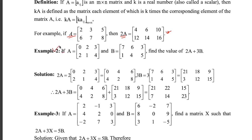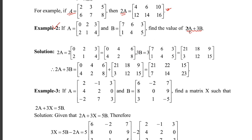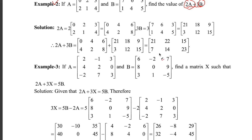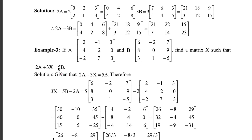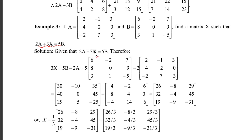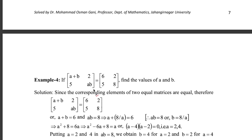For example, if A is a given matrix, then 2A means multiplying each entry by 2: you get 4, 6, 10, 12, 14, and 18. Similarly in example 2, you first calculate 2A, then calculate 3B, then add the two resulting matrices. And you can also find X by computing (1/3)(5B − 2A).